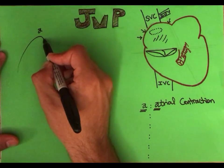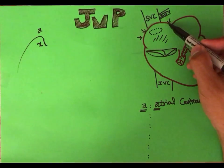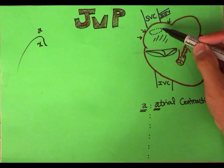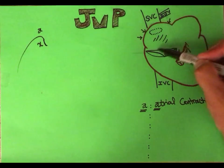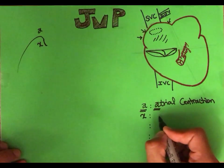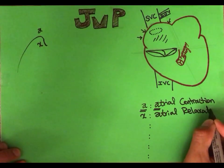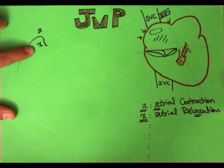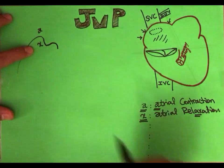After the A wave there is a down-sloping wave called the X wave. After the atrium contracts, it relaxes because blood has passed into the right ventricle, so no extra contraction is needed. This relaxation decreases the pressure inside the right atrium. X stands for atrial relaxation.